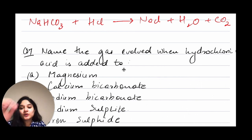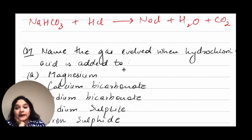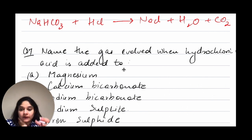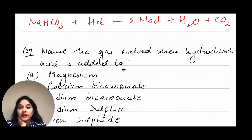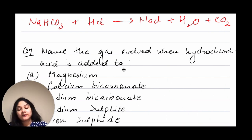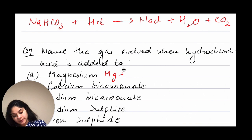The last question for today — question number seven: name the gas evolved when hydrochloric acid is added to the following compounds. We will write the formulas and figure out what gas is evolved. I will share this file in the description box as notes, with the equations for this question. First, magnesium plus HCl — of course, that gives us hydrogen gas.